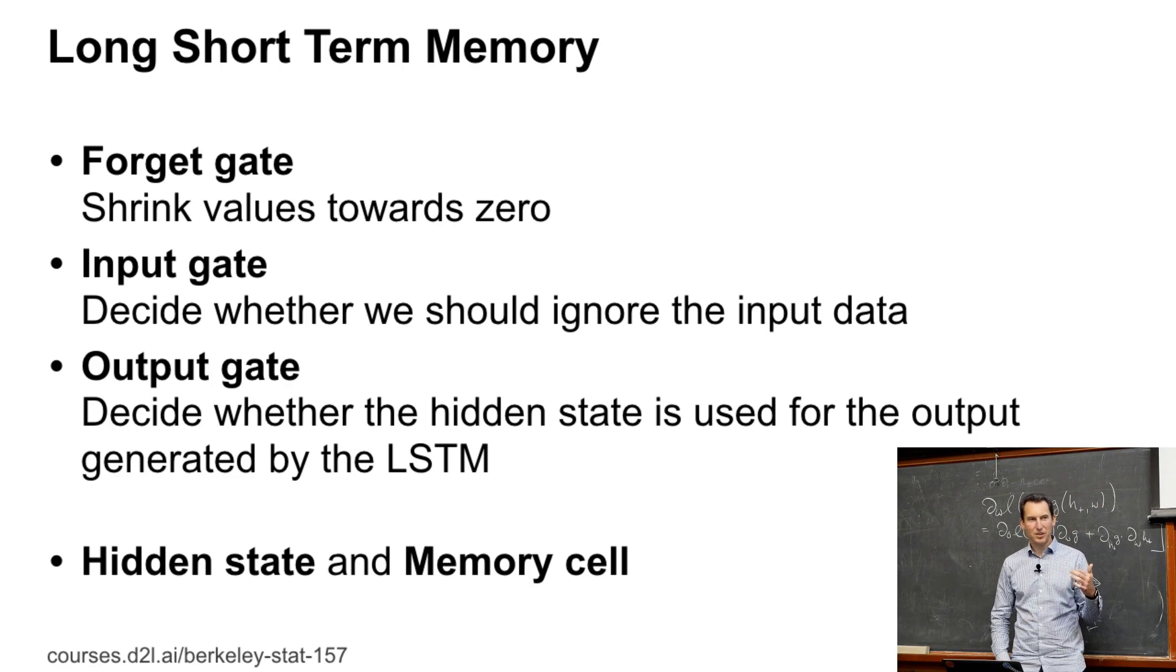And so with those insights, they decided to engineer something mathematical that has that property. So this predates the GRU by over a decade. And it is in most cases superior, just that it's also a little bit more complex. So the first thing that you would do is you would have a forget gate. And this basically should just shrink values towards zero. You need to have an input gate which decides whether we should ignore the input data. And an output gate which decides whether we should actually use the hidden state for the output generated by the LSTM.